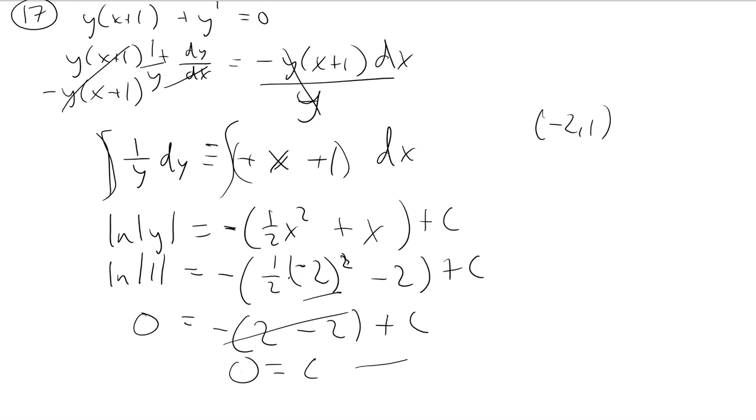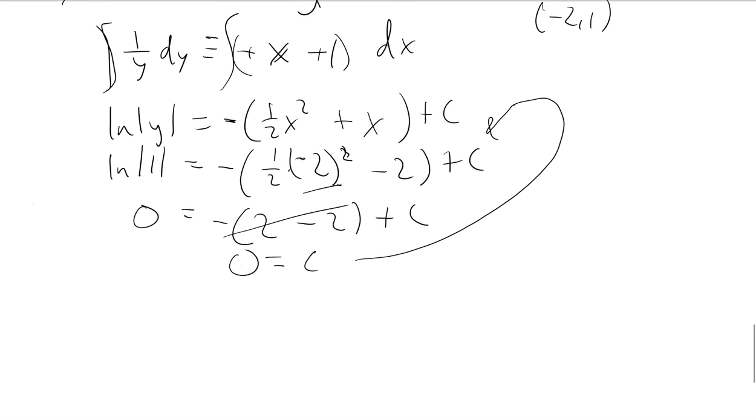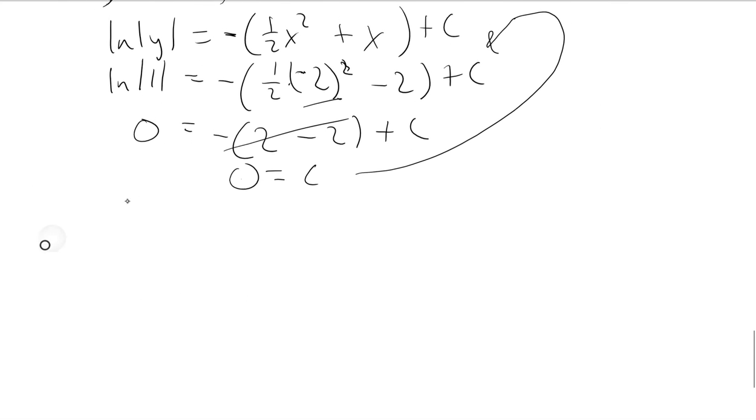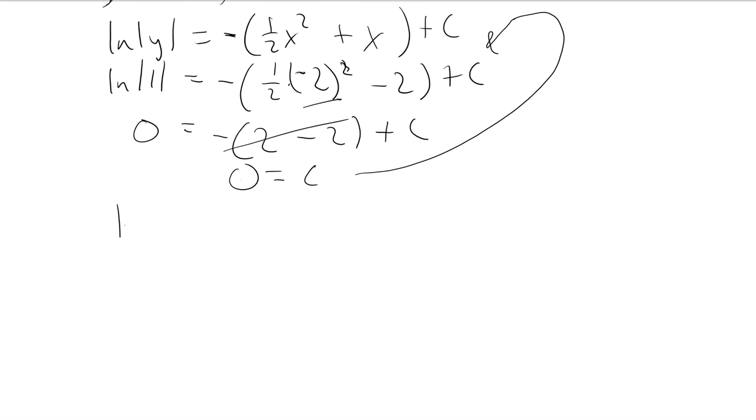All right, now if we go and plug that in back up here where I started plugging in my x and y and solving for c, looks like I get natural log absolute value of y is, when distributed, negative 1 half x squared minus x, and then plus c, which I now know is plus 0.